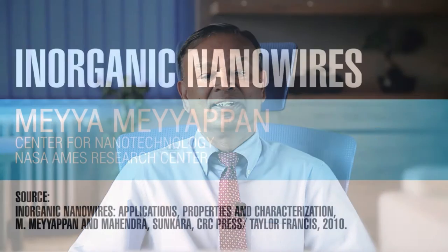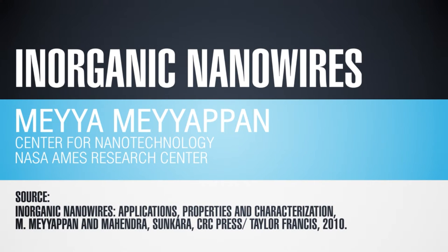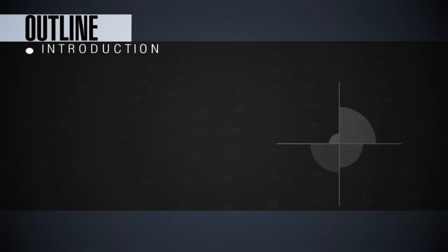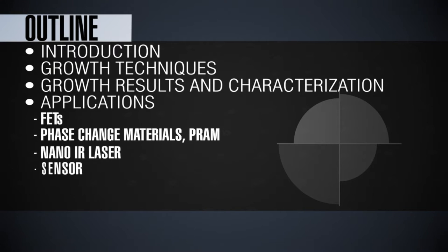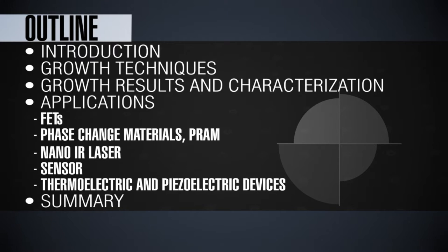In this lecture, I'm going to discuss a class of nanomaterials called inorganic nanowires. The nanomaterials are the backbone for the development of nanotechnology-based products. In my earlier lectures, I did talk about the wonderful properties and applications of carbon nanotubes and graphene. In this lecture, I'm going to focus on inorganic nanowires. First, I will give some brief background on inorganic nanowires. Then, I will focus on how to grow these nanowires and then show some results from the growth and characterization. Finally, I will focus on some of the applications for these nanowires.